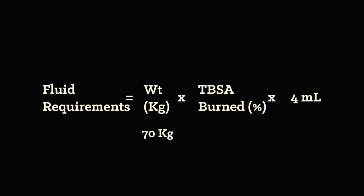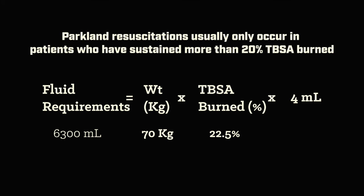Plugging this in to the Parkland formula seen here, we know he is 70 kilos, and from the Rule of 9's we know his TBSA is 22.5. This gives us a total of 6.3L of IV fluids to give our patient over the next 24 hours. One caveat about using this formula is that you typically only consider a Parkland formula resuscitation in patients with greater than 20% TBSA burned. In this case, our patient has 22.5% TBSA burned, so we'll use it.